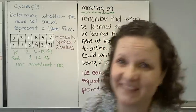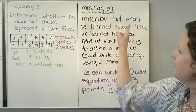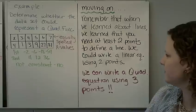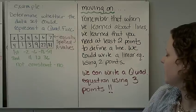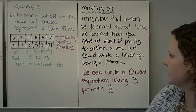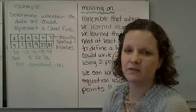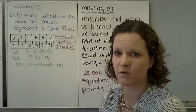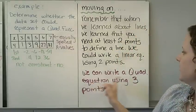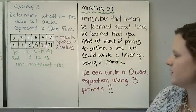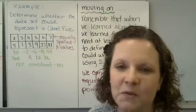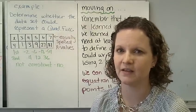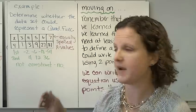Let's move on to something different. Remember that when we learned about lines, we learned that you need at least 2 points to define a line — we could write a linear equation using any 2 points. We can also write a quadratic equation using 3 points. We're going to be writing a quadratic equation, ax² + bx + c, when we're just given 3 ordered pairs.